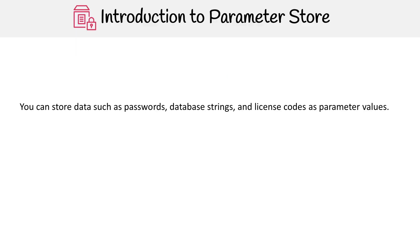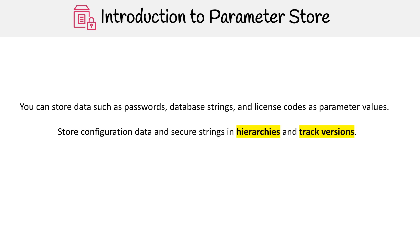With Parameter Store, you can store data such as passwords, database strings, license codes as parameter values, and store configuration data and secure strings in hierarchies and track versions. You can also encrypt these parameters using KMS, though that doesn't necessarily mean things are encrypted by default in Parameter Store.